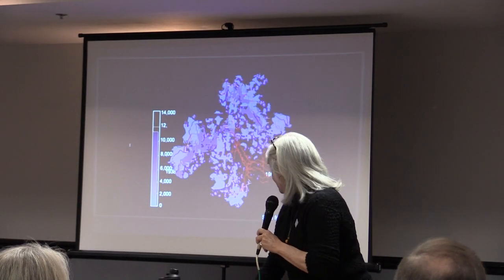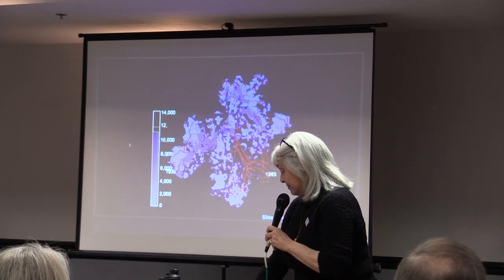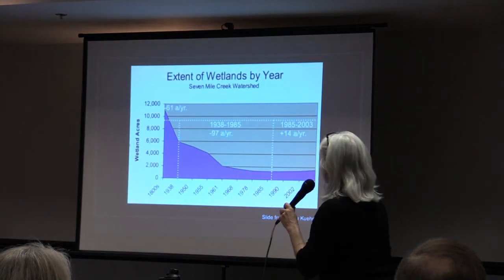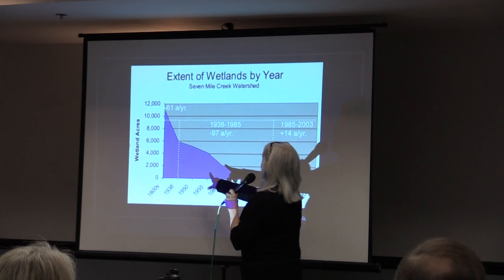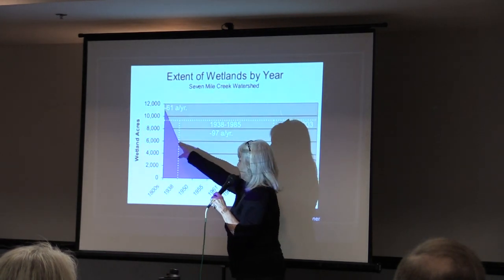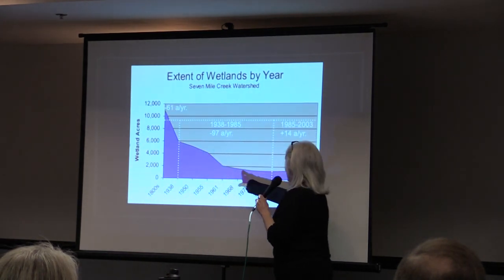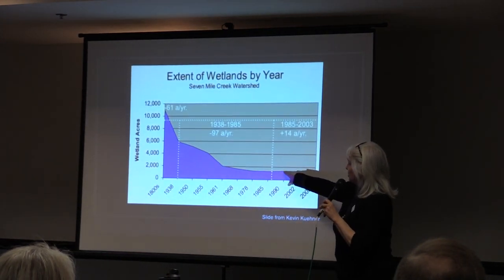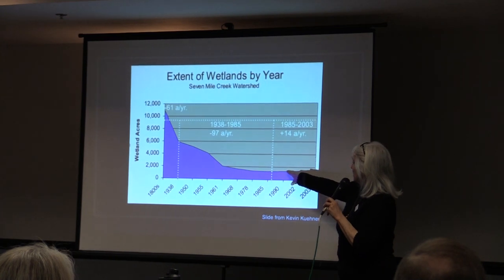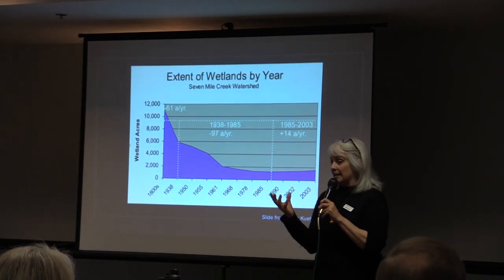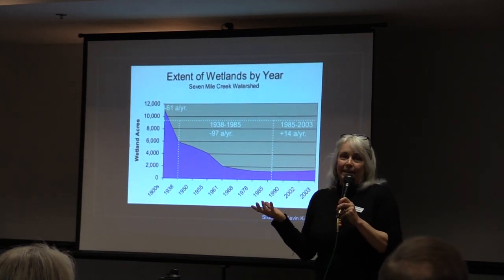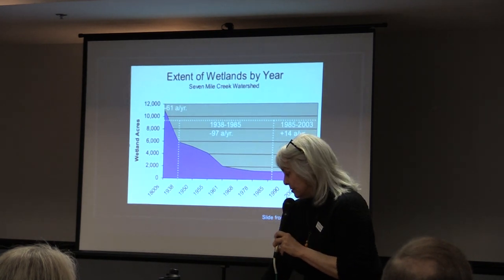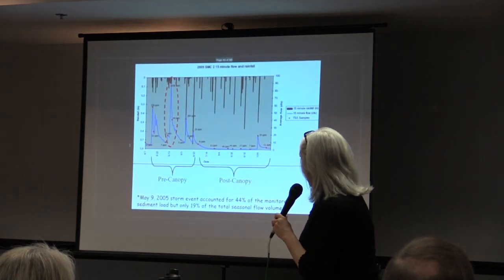The wetlands in the 7 Mile Creek watershed don't exist anymore. That was a map of what it looked like in 1938, and now we're down to just a very small percentage of the water held on the landscape. Swan Lake still exists in that area, but we don't have very much water storage otherwise.